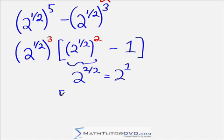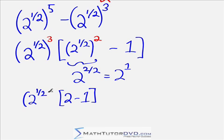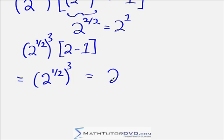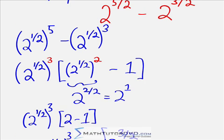So inside these brackets, long story short, we're going to get 2 minus 1. Outside the brackets, we still have 2 to the 1 half raised to the third power. So continuing on, 2 minus 1 is 1. So this entire thing is equal to 2 to the power of 1 half raised to the power of 3. But now that we've gotten to the answer, we can multiply these together again. So it would be 2 to the 3 halves power. And that is the answer.